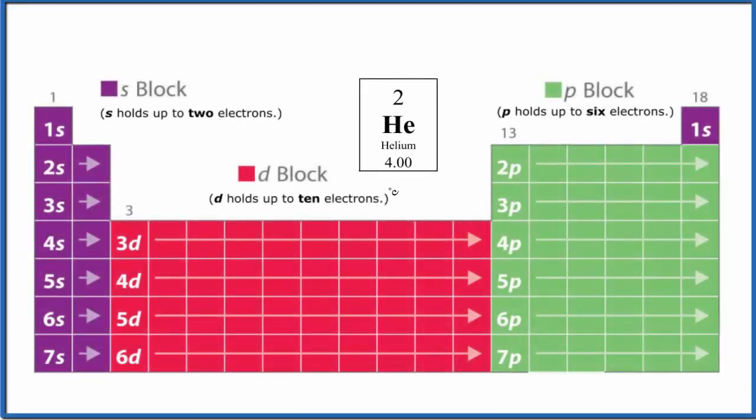In this video, we'll write the atomic orbital diagram for helium, that's He. The first thing we need to do is write the electron configuration for helium, which is fairly simple.